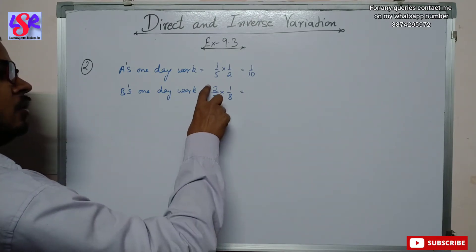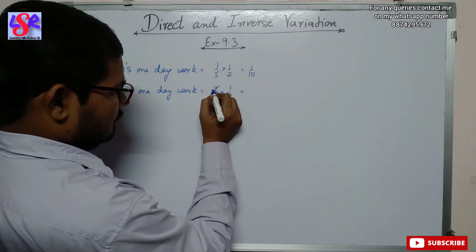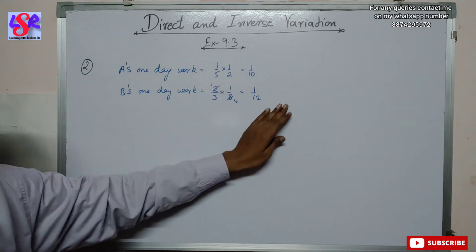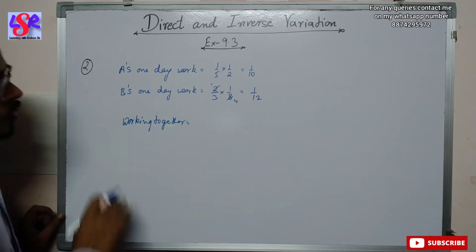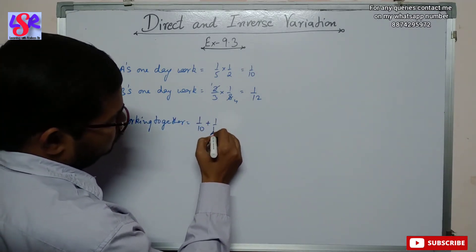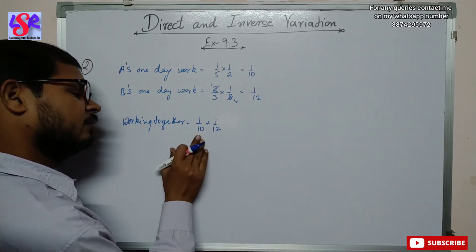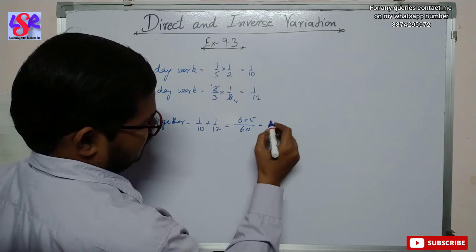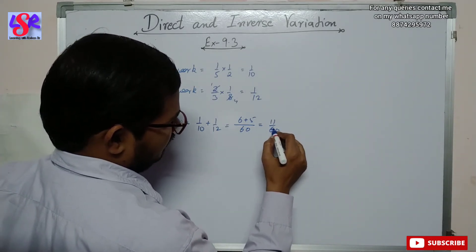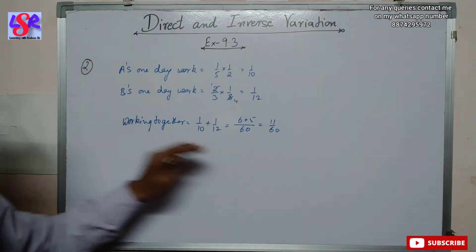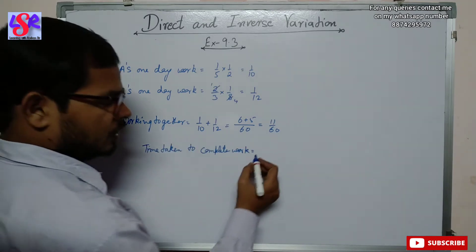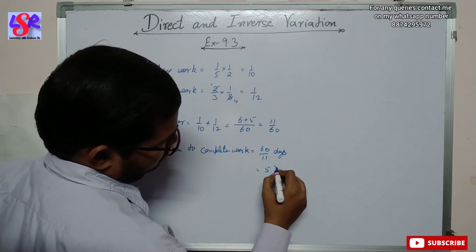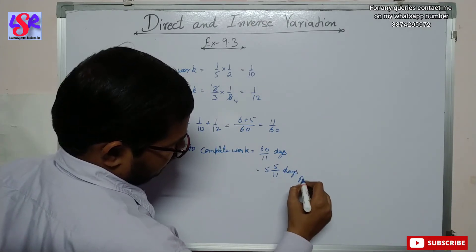Similarly, B's one-day work is two-thirds into one-eighth. Cancelling, this equals one upon twelve. Working together, their combined one-day work is one upon ten plus one upon twelve. The LCM is sixty — so six times and five times — giving eleven upon sixty. This means eleven upon sixty part of the work is completed by both together in a single day. Therefore, the time taken is sixty upon eleven days, which is five and five-elevenths days.